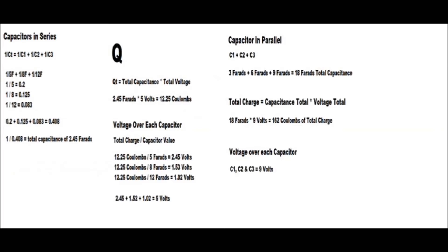So as we've seen, if we put capacitors in a series circuit the total capacitance drops, the amount of charge lessens, and the voltage drops as it passes through each capacitor. When capacitors are in a parallel circuit the capacitance increases as does the amount of charge, but the voltage remains the same over each one. In later videos we'll mix capacitors and resistors in series and parallel and examine the effects. In the next video we'll look at transistors. Thank you for all your support on this video series — please feel free to ask questions and leave comments.